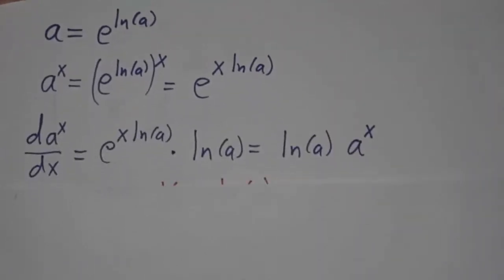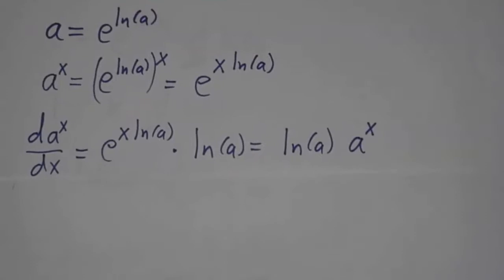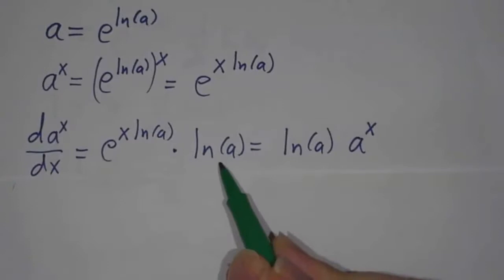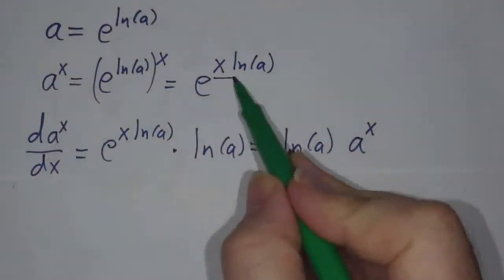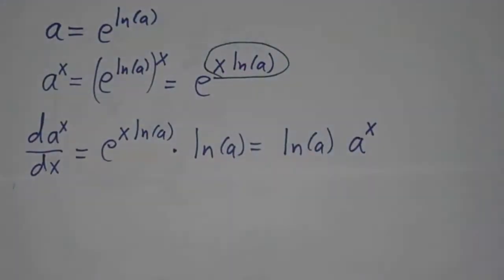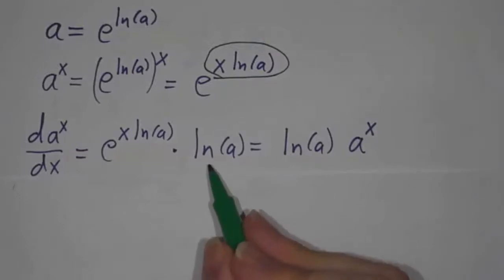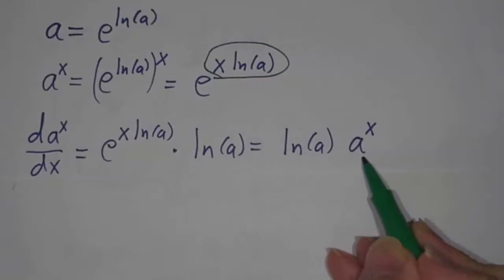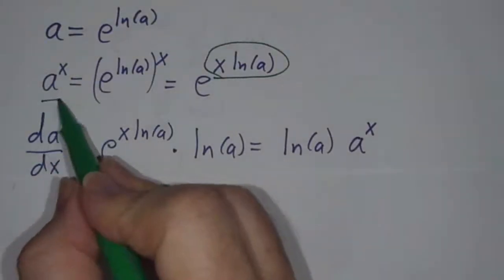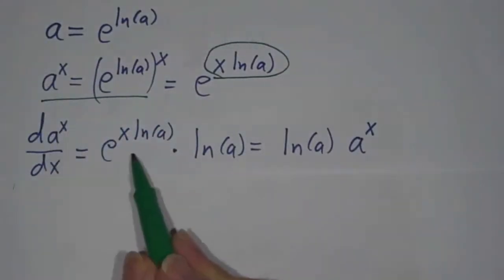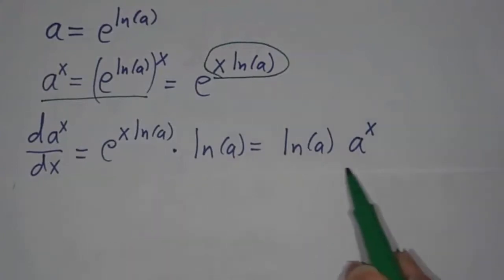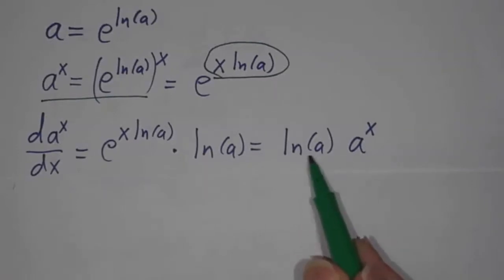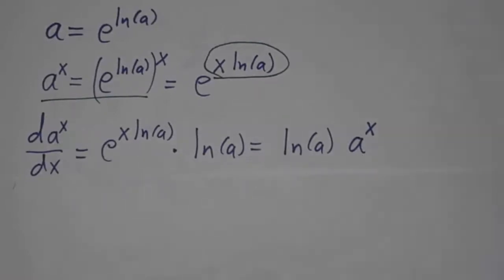We know how to take the derivative of e to the anything. The derivative of e to the anything is e to that anything times the derivative of the anything. And the derivative of x times the natural log of a is just the natural log of a. So we get the natural log of a times a to the x. I have freely used this fact: a to the x is e to the x log a, which is a to the x again. So the derivative of a to the x is the natural log of a times a to the x.